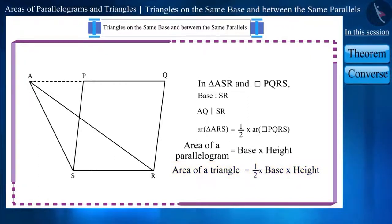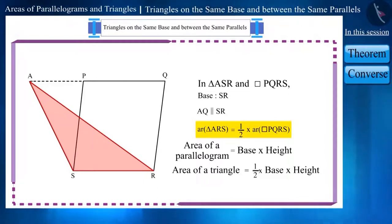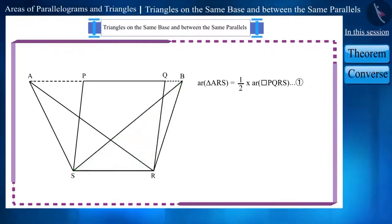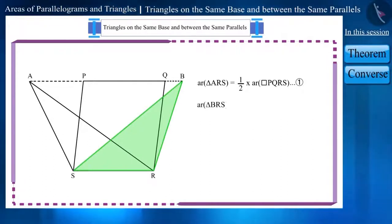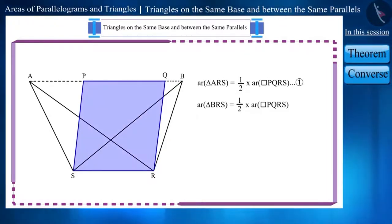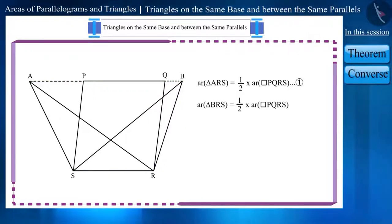If we look at this figure, can we say that area of triangle ARS equals 1/2 multiplied by area of parallelogram PQRS? Yes — let's call this equation 1. If we construct another triangle here, triangle BRS, then can we say that area of triangle BRS equals 1/2 multiplied by area of parallelogram PQRS? Yes, because triangle BRS and parallelogram PQRS are situated on the same base and between the same parallel lines. Let's call this equation 2.